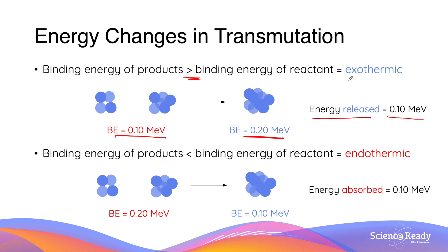Let's look at what happens when the binding energy of the product is less than the binding energy of the reactants. In this example, 0.2 MeV of binding energy is needed to break apart these two nuclides. When the product nucleus is formed, its binding energy, 0.1 MeV, is released. This time, we have more energy going into the system and less coming out of the reaction.